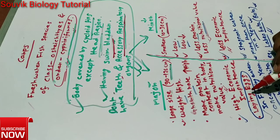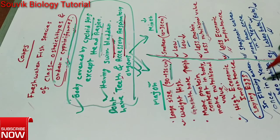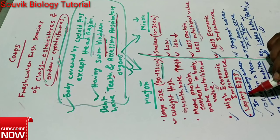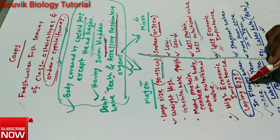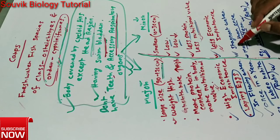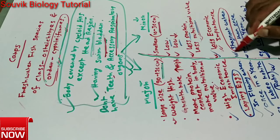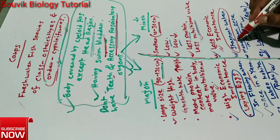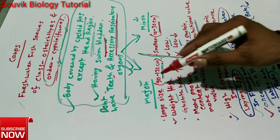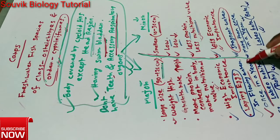The next point is very important — about laying eggs. Major carps lay eggs in flowing water, whereas minor carps lay eggs in stagnant or restricted water. Also, major carps generally lay eggs once in a year.